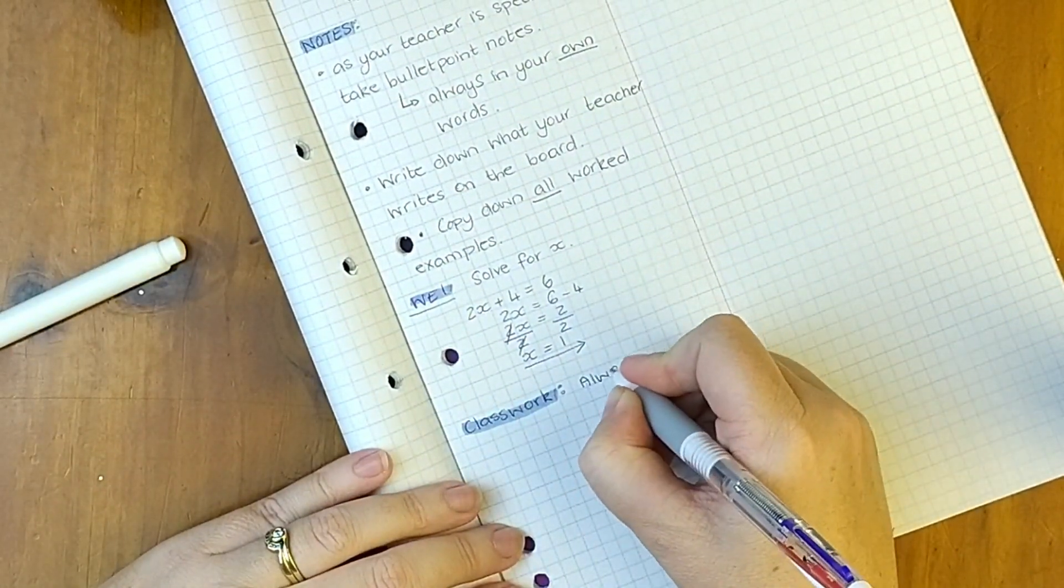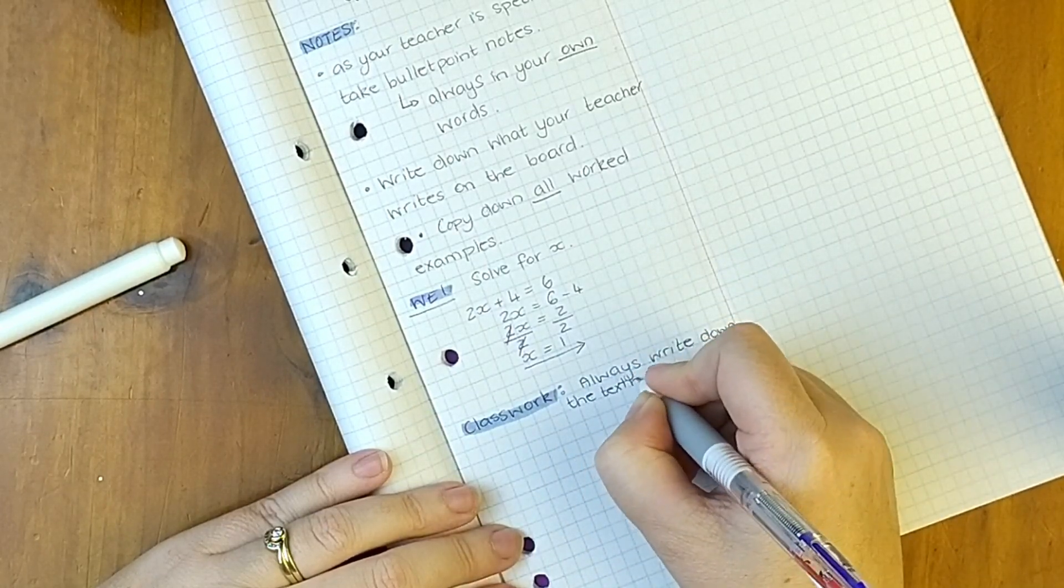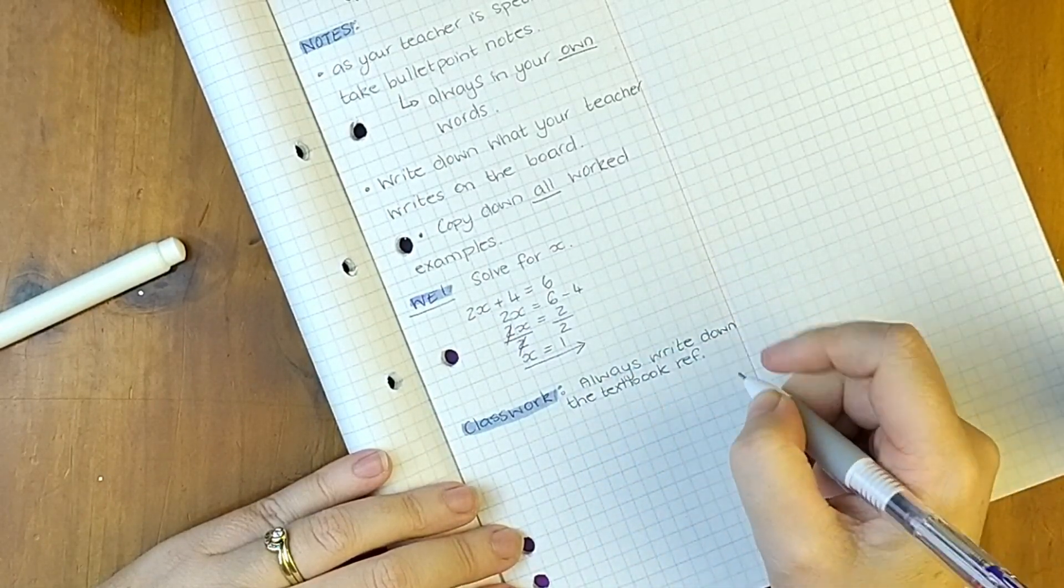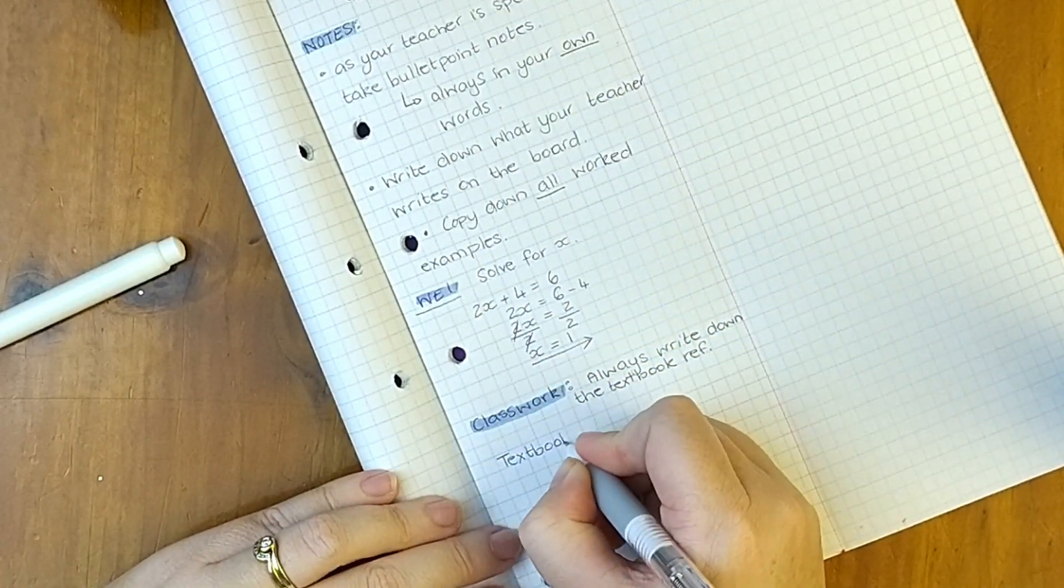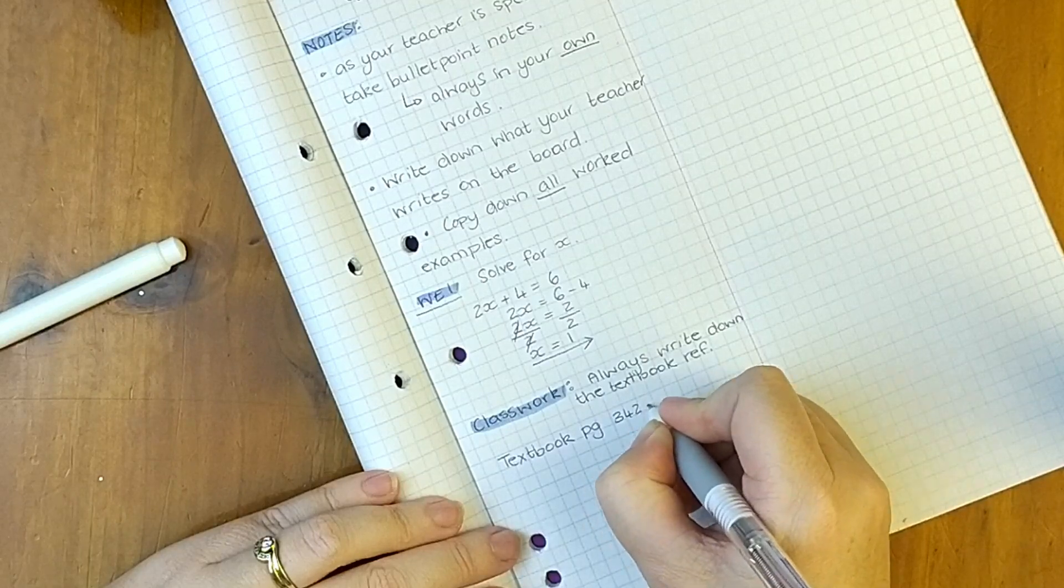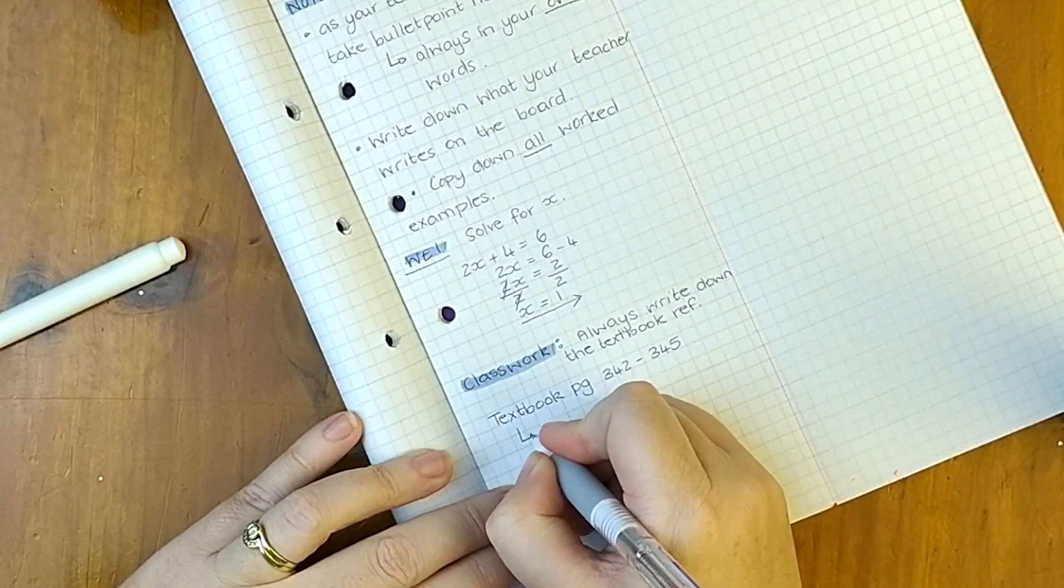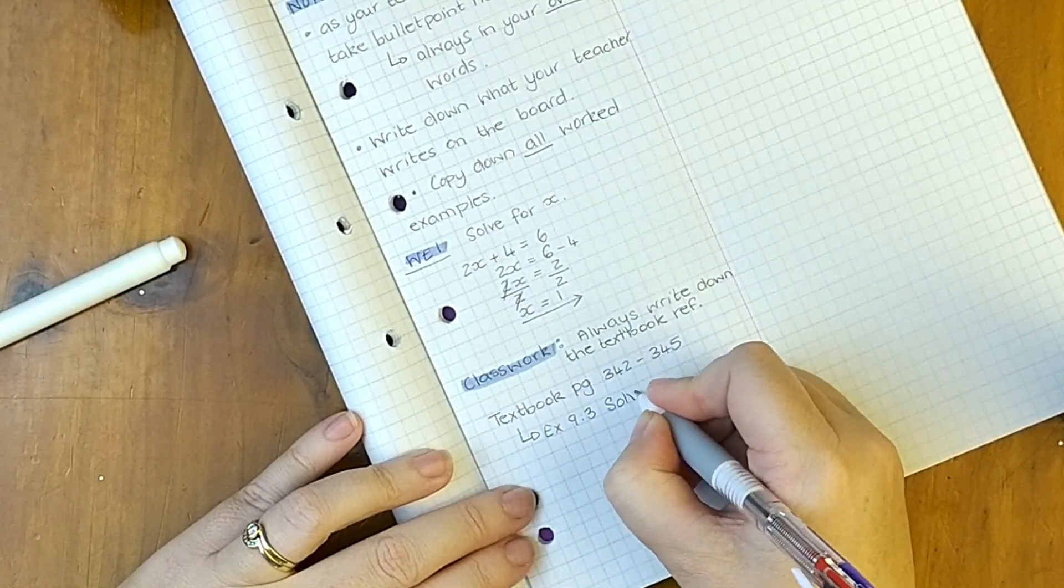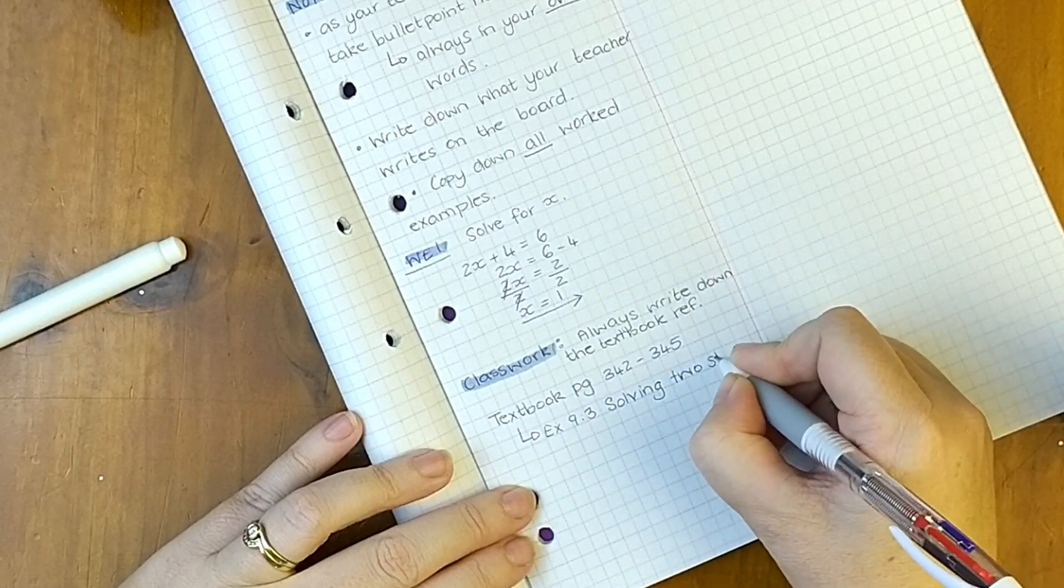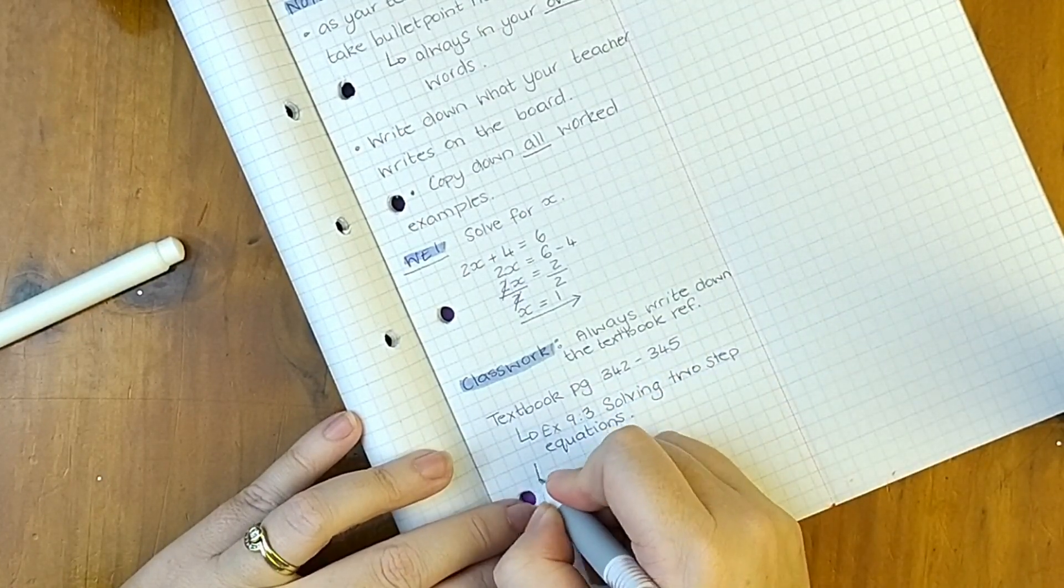And moving on to classwork. So you've done your examples and your notes, now you're going to do your classwork and it's important to always write down the textbook reference for this so that it's easy to find later on. We always write down the textbook page numbers that we're looking at and we're also going to write down what exercise number and title it is that we are working from.